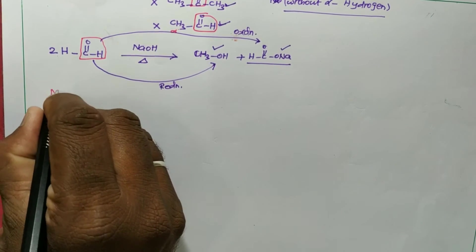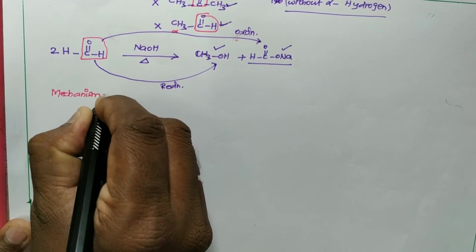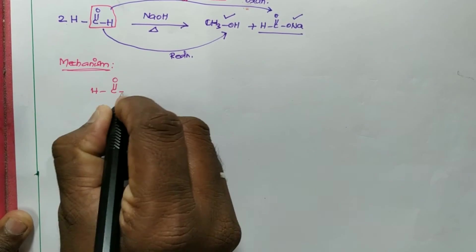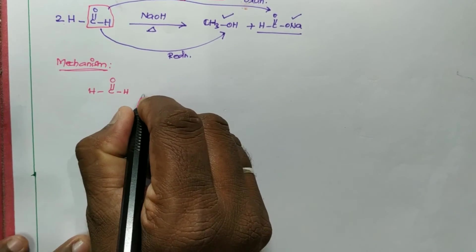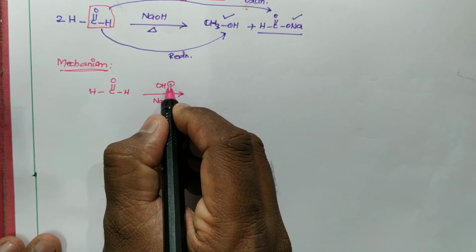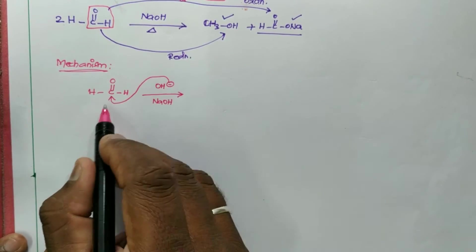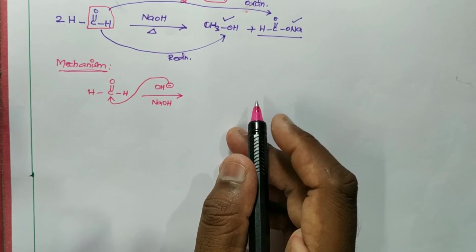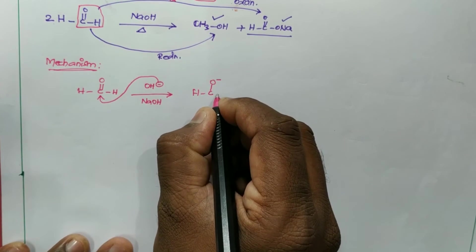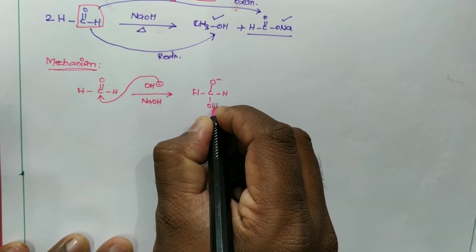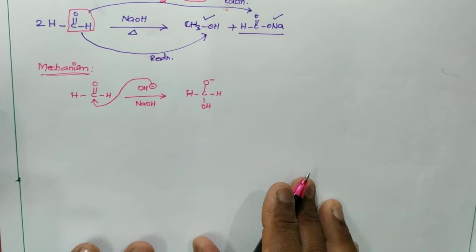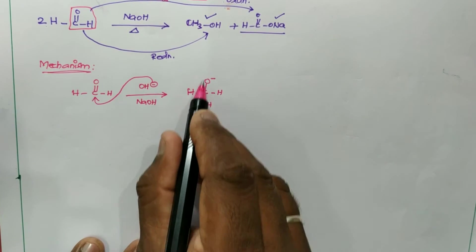Let's go to the mechanism. The mechanism is very simple. The first molecule is formaldehyde: H-C(=O)-H. This formaldehyde is going to react with our nucleophile. Here we used NaOH, and the OH⁻ will be acting as a nucleophile. The nucleophile always attacks the carbon. So the nucleophile will come and attack the carbon, and by that way I will be getting H-C(O⁻)(OH)(H) — a hydroxy alkoxide intermediate.